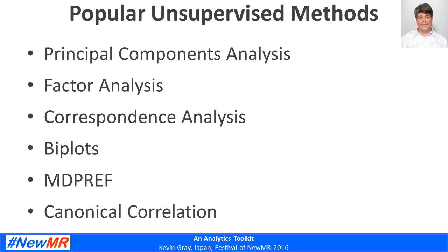Let's move on to a quick snapshot of some unsupervised methods. Correspondence analysis is very widely used in mapping. Big brands can dominate a brand map — they score high on everything and it's kind of boring — and correspondence analysis is one way to reduce that brand size effect, though not the only way. Biplots are perhaps the most important, along with principal components analysis, which is also widely used for pre-processing data, for example prior to cluster analysis or regression analysis.